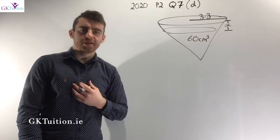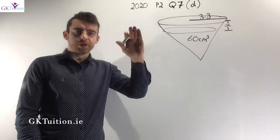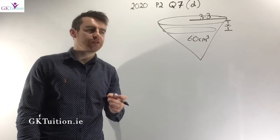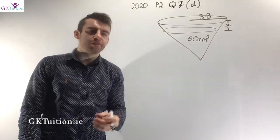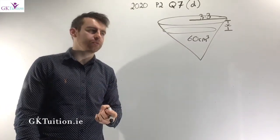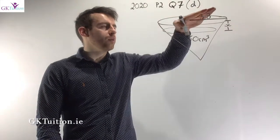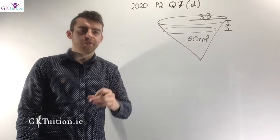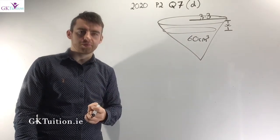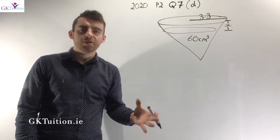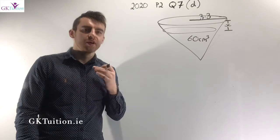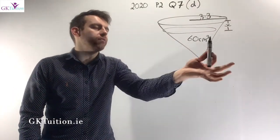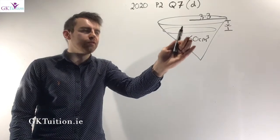In the final part, the company wants to lower the water level so the volume is exactly 60 cm cubed. We need to find how far below the rim the water must be. I'll use the volume formula: volume of a cone = one-third π r² h, with volume = 60. The problem is I don't know r or h — two unknowns — so I need to use similar triangles to express one variable in terms of the other.